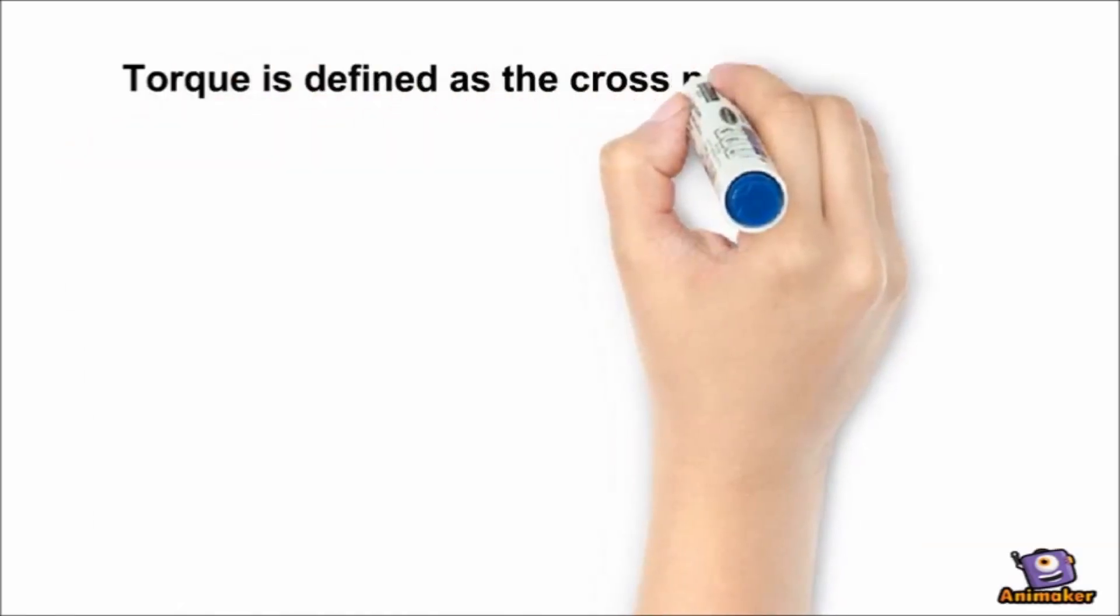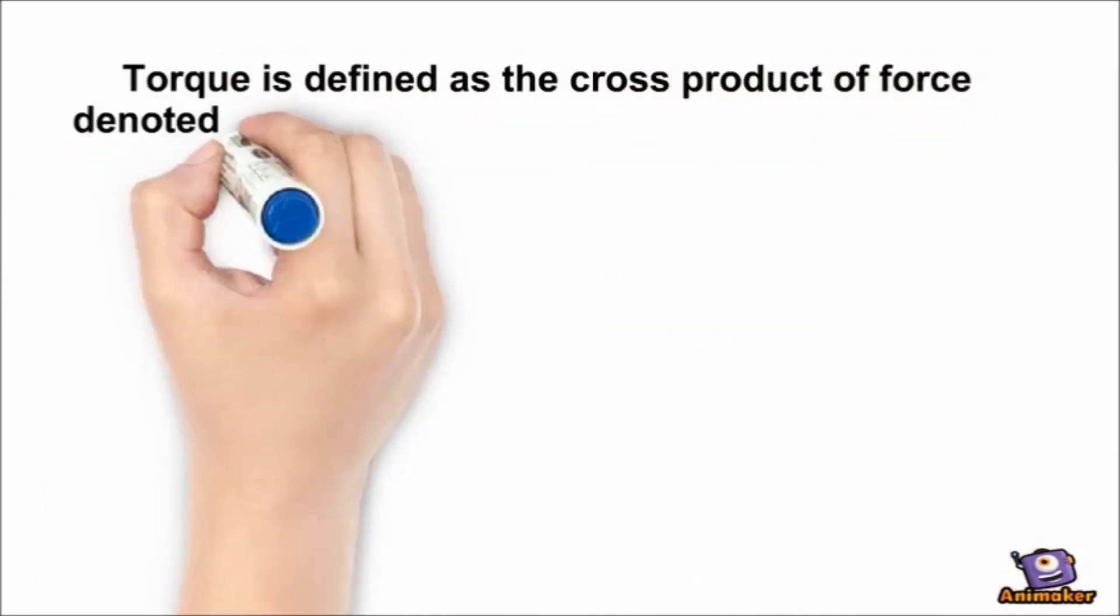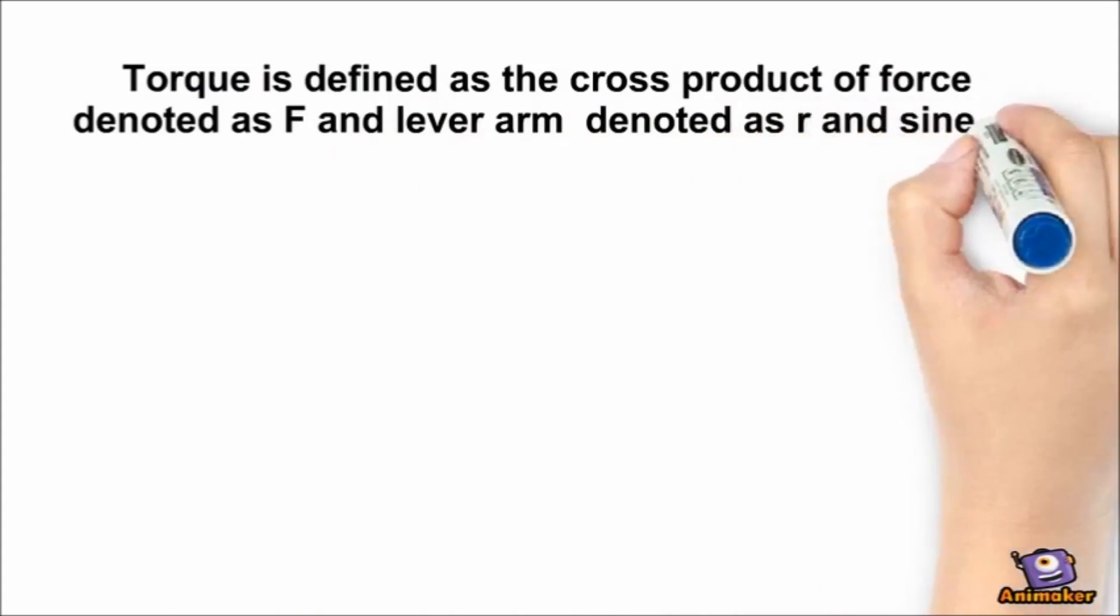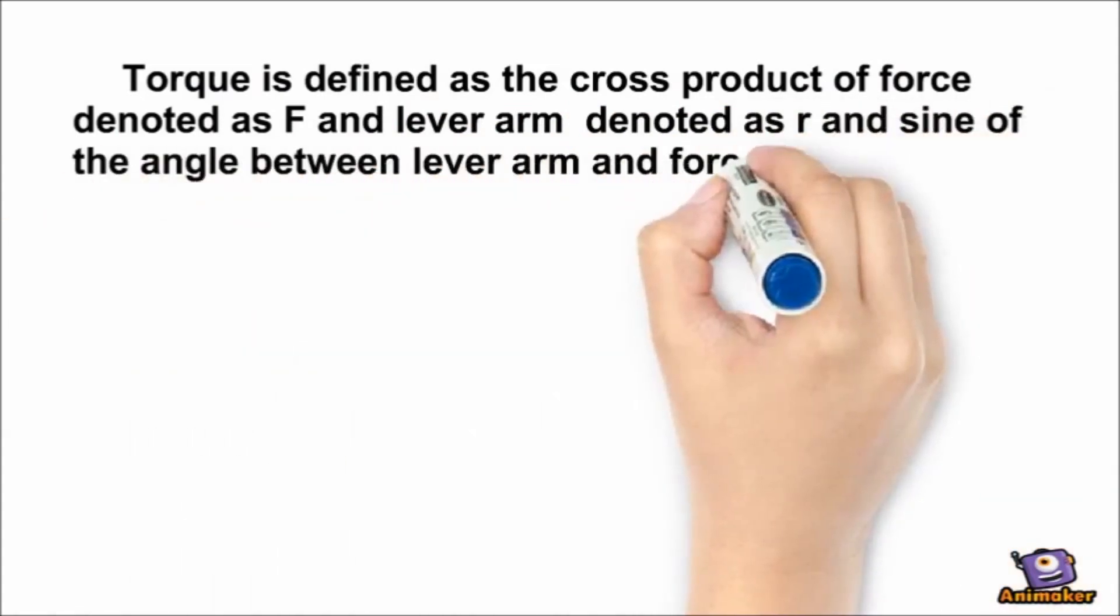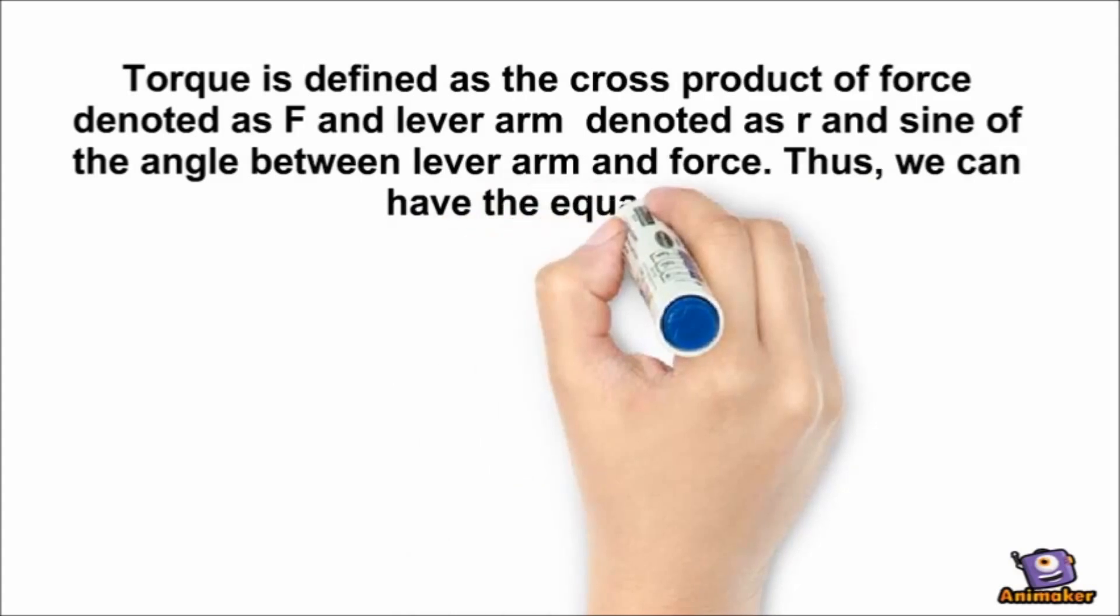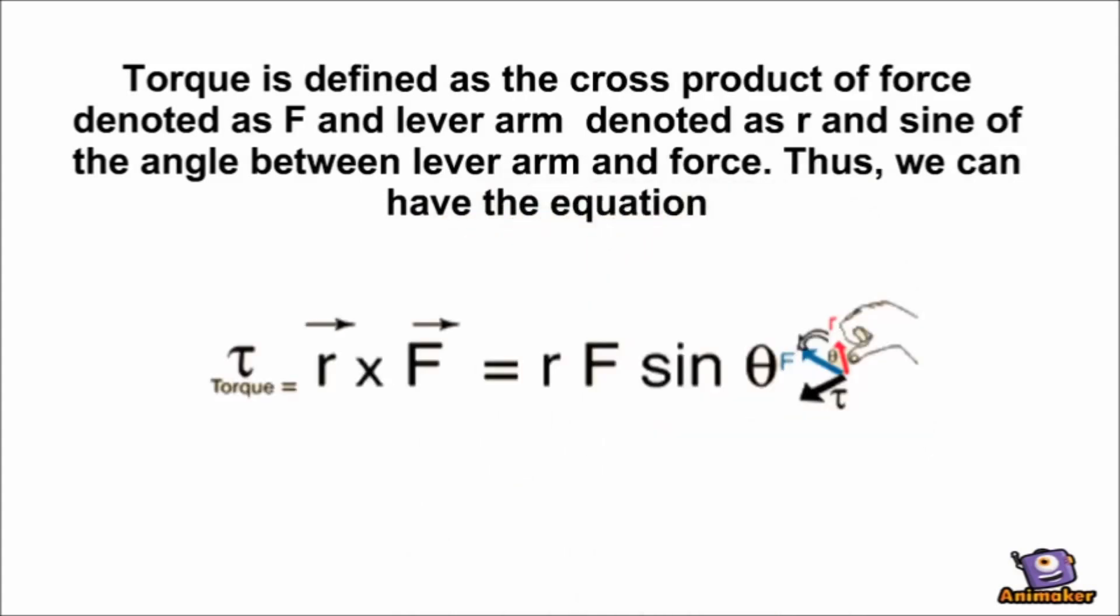Torque is defined as the cross product of force denoted as F and lever arm denoted as R and sine of the angle between lever arm and force. Thus, we can have the equation, torque is equal to R F sine theta.